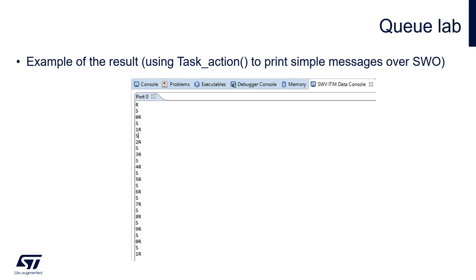The output is visible in the SWV ITM data console — it can also use USART. What we see is that the receiver first tried to read something and it was not possible. Then the sender goes to operation and sends 0 to the queue, which is received by the receiver in the next row — so we see 0 and receiver. Then sender sends 1, and receiver displays 1. Then 2, 3, and so on up to 9, after which it starts from 0 again.